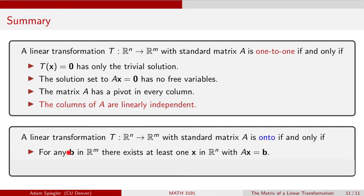if and only if any vector b in the codomain, which is R^m, there exists some pre-image, some vector x in the domain, so that when I multiply matrix A by vector x, I can get vector b. So in other words, we want to make sure that every single vector in the codomain is also in the range of this function.